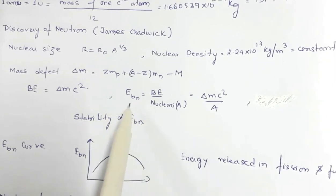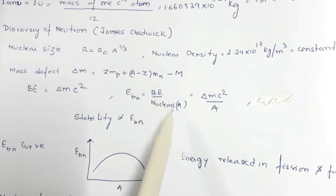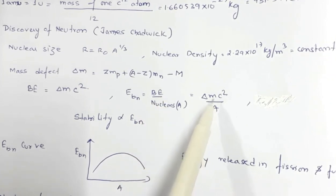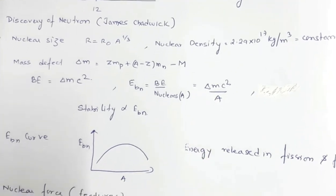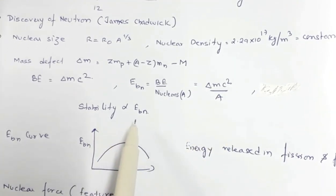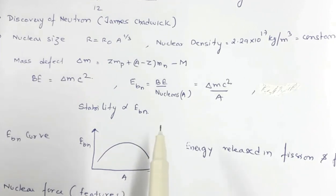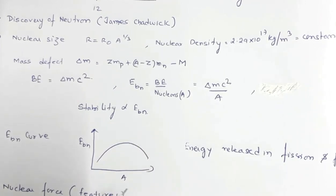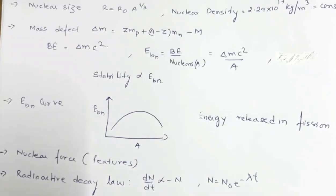From binding energy alone we can't determine whether a nucleus is stable or not. Stability is given by binding energy per nucleon (Ebn), which is binding energy divided by the total number of nucleons: Δm·c² / A, where A is the mass number. Greater the binding energy per nucleon, greater will be the stability.